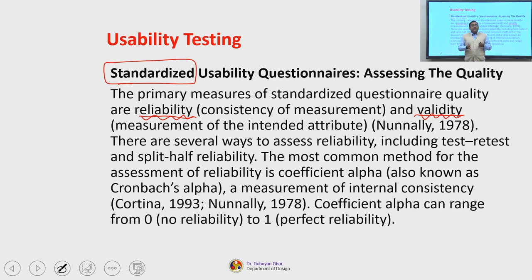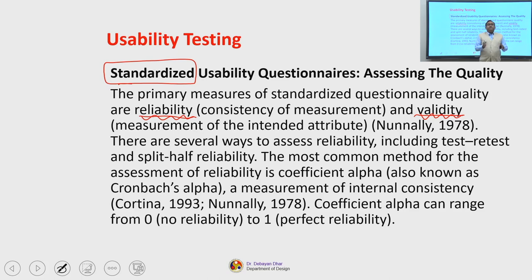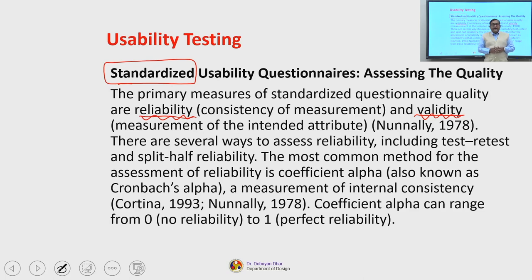Coefficient Alpha can range from 0 to 1, where 0 means there is no reliability and 1 means perfect reliability. A good standardized questionnaire generally has a Cronbach's Alpha in the range of 0.7 to 0.8, which is considered an ideal range.